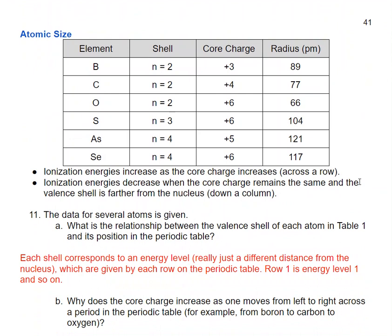We can talk about atomic radius and how it relates to periodic trends. We have data for several atoms. Each shell corresponds to an energy level — electrons at different distances from the nucleus — given by each row on the periodic table: row one is energy level one, and so on. This is how we know where each row ends, and it's based on experimental observations like ionization energy, supported by trends in reactivity and other periodic trends.